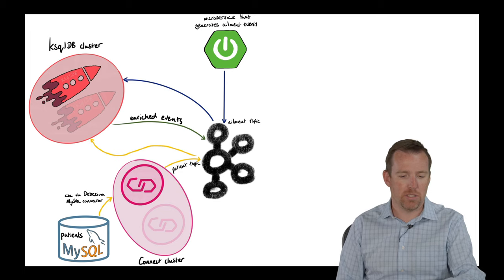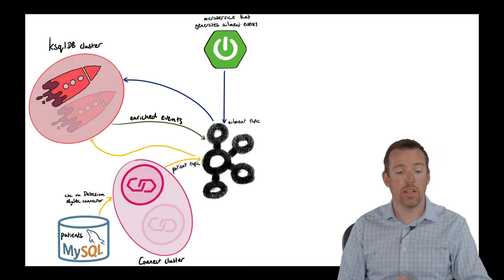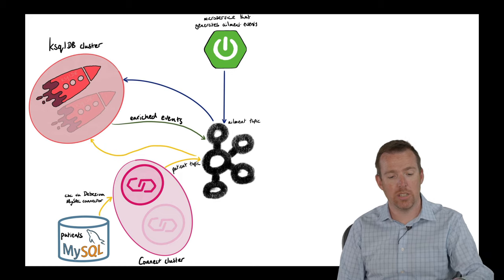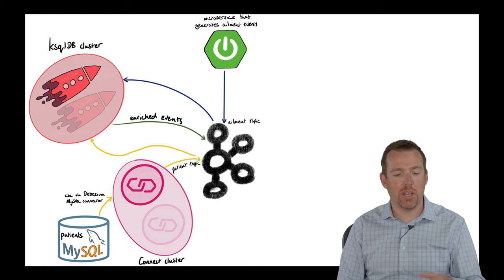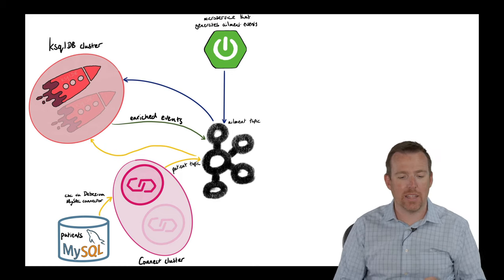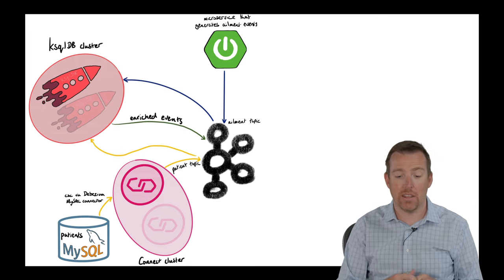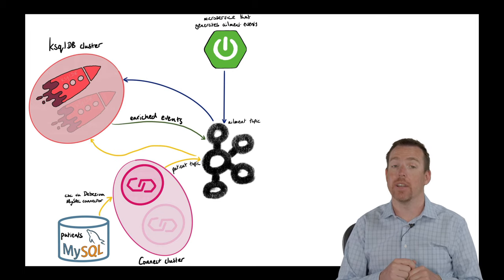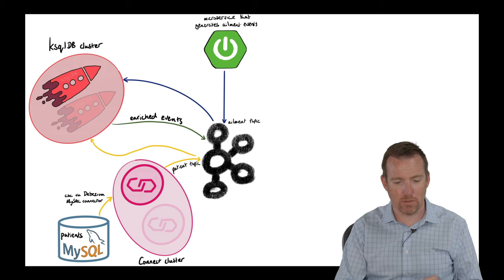Again, I've color coded these. We've got the yellow topic going into ksqlDB, the patient. We've got the blue events going in, and when you join them together, you get enriched events that get written back to Kafka. So that's how that's all working.